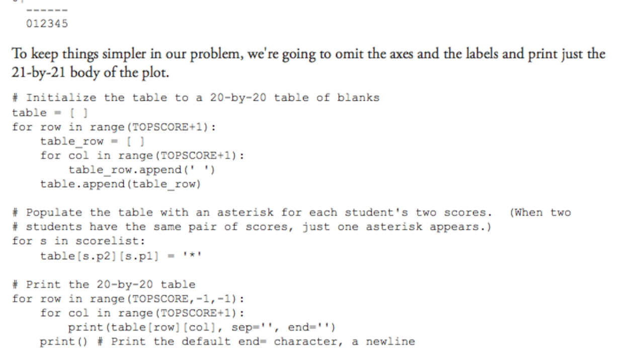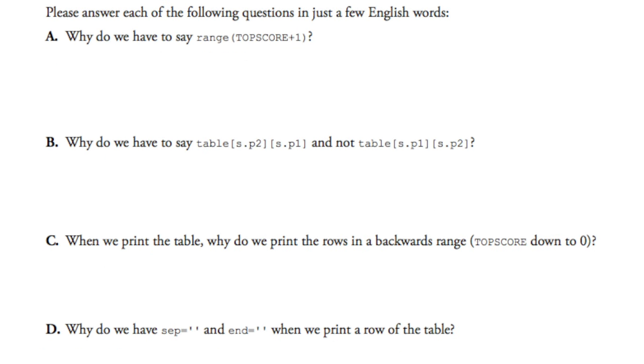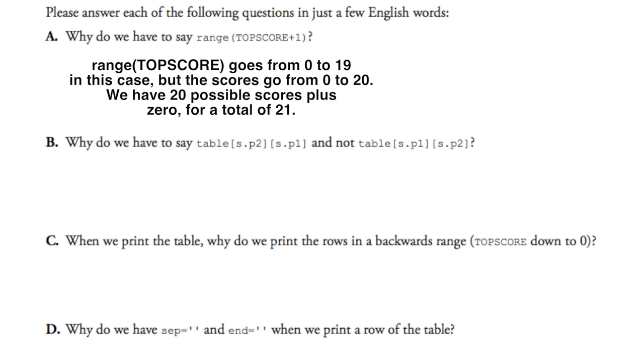So question A says: Why do we have to say range(TOP_SCORE + 1)? Well, if we said range(TOP_SCORE), it would only make the table from zero to nineteen. So it would only have nineteen columns and rows when we need twenty columns and rows. So this would actually not work for the data that we need to present.